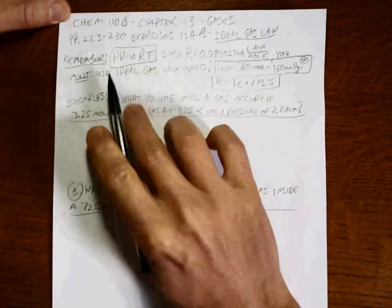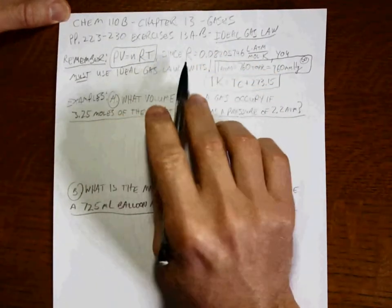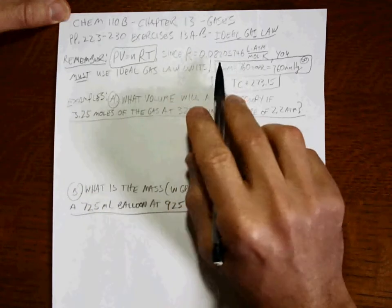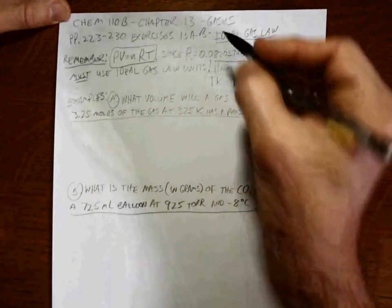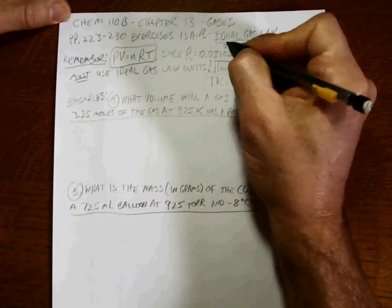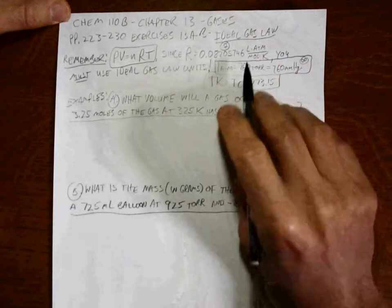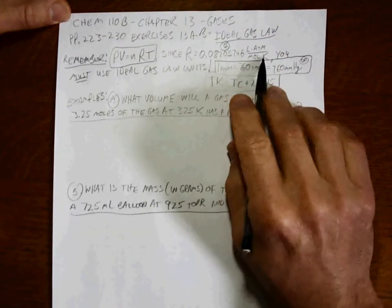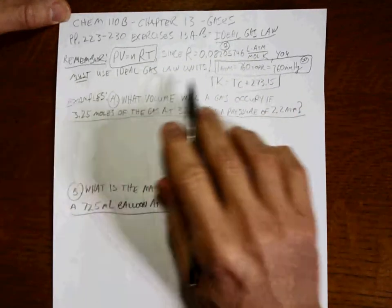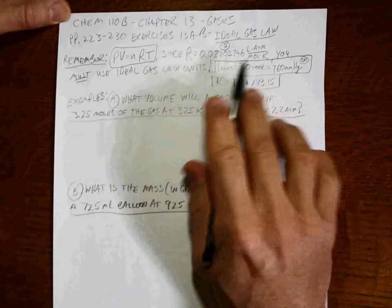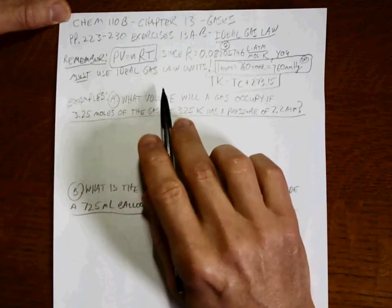Remember, the Ideal Gas Law, it's pretty easy to remember: PV equals nRT. And since R, which is given, is that value with 1, 2, 3, 4, 5, 6, 7 sig figs, but these units of liters, atmospheres, moles, and kelvin, you have to remember to use liters, atmospheres, moles, and kelvin when using the Ideal Gas Law.